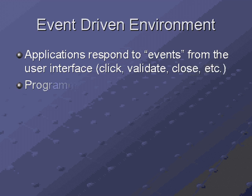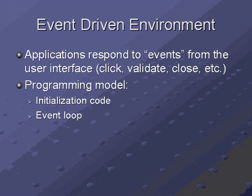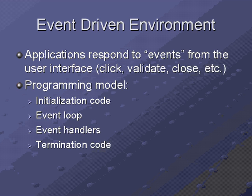AccuTerm GUI applications typically consist of four sections. The initialization section handles things like opening files, initializing the GUI environment, and displaying the first GUI form. Next, the program enters an event loop — the heart of the program, analogous to an input statement in a typical program. The event loop retrieves events from the client, decodes the event, and passes it to an appropriate event handler. The loop continues until the program terminates. Event handlers are subroutines which handle specific events, such as clicking the OK button. Finally, the termination code shuts down the GUI environment and performs any application-specific cleanup.